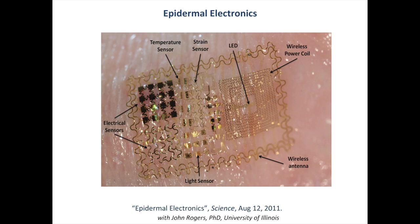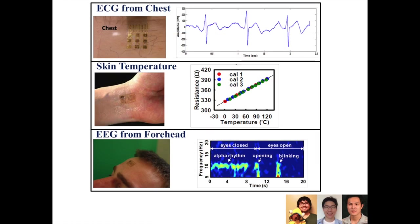One interesting aspect is that we have to be bio-integrated — when you're wedding electronics with biology, things a typical electrical engineer wouldn't think about become critical, like having serpentine structures to accommodate mechanical deformations. We demonstrated in 2011 that we can monitor the electrical rhythms of the heart, skin temperature, and the electrical rhythms of the brain — the EEG. But what we got interested in was going one step further when I got to UCSD: collaborating with clinicians.